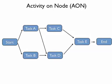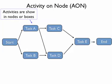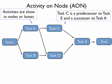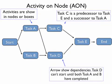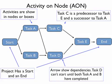In activity on node, the activity is represented by a node. These nodes do not vary in size to indicate relative amounts of time — they are simply ordered in a network. The activities are shown in nodes and boxes, and we can tell the precedence from the way these boxes are arranged and the arrows are used. For example, task D can't start until both task A and B have completed. The project also has a start and an end node.